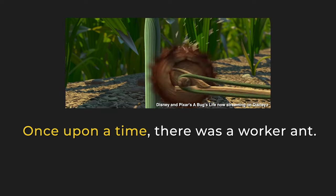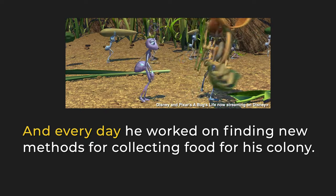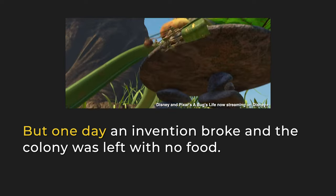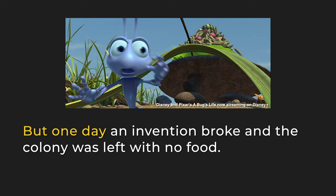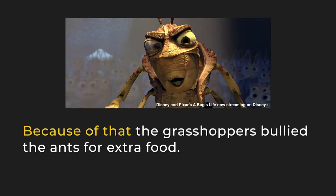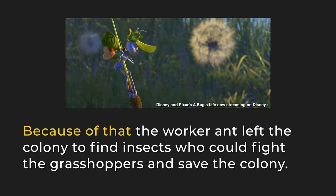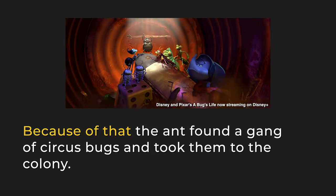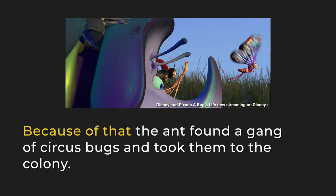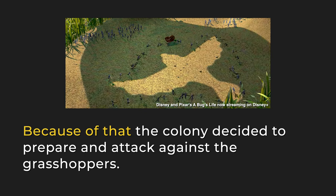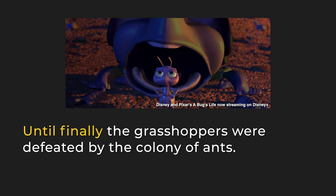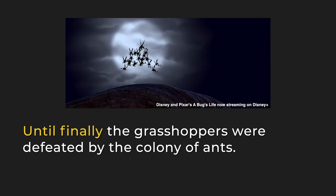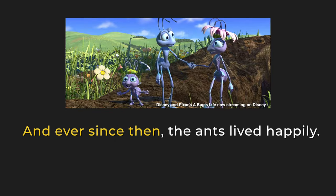Great, we know the theory, now let's put it in action. Once upon a time there was a worker ant, and every day he worked on finding new methods for collecting food for his colony. But one day an invention broke and the colony was left with no food. Because of that the grasshoppers bullied the ants for extra food. Because of that the worker ant left the colony to find insects who could fight the grasshoppers and save the colony. Because of that the ant found a gang of circus bugs and took them to the colony. Because of that the colony decided to prepare an attack against the grasshoppers. Until finally the grasshoppers were defeated by the colony of ants, and ever since then the ants lived happily.